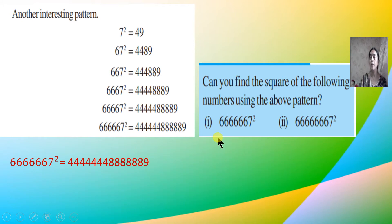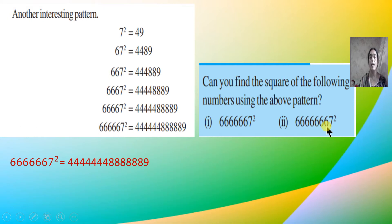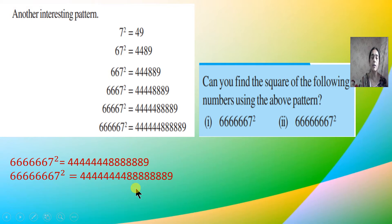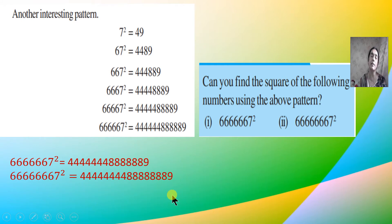For the next number with seven 6s and one 7: there are seven 6s, so I write eight 4s, then seven 8s, then one 9. Counting: 1, 2, 3, 4, 5, 6, 7, 8 fours; then seven 8s and one 9. I hope all these patterns are very clear. You can also try by adding one more 6, or write 10 sixes and a 7 and answer within a second!